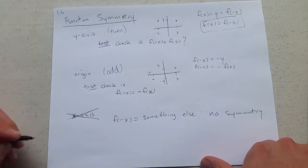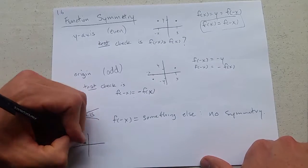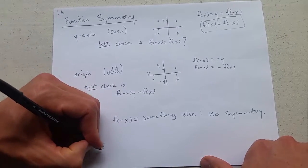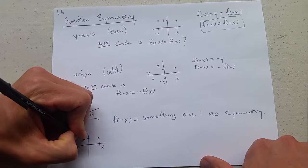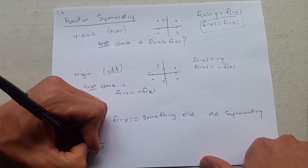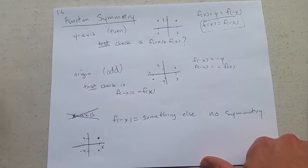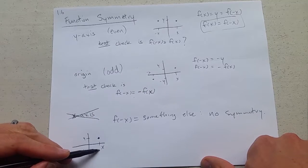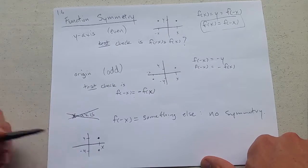So why did I throw out x-axis symmetry? Well, what does x-axis symmetry look like? It looks like this. This point will be symmetric with respect to the x-axis with this point.